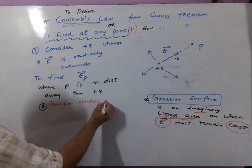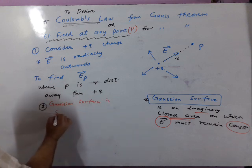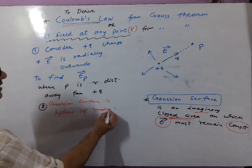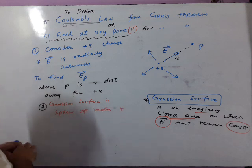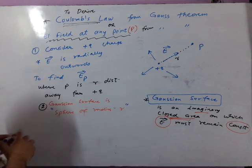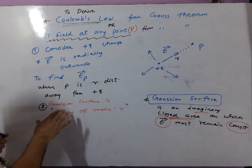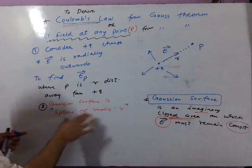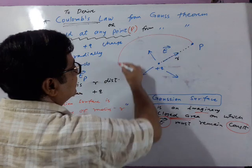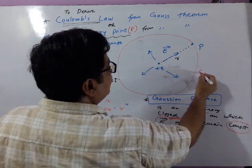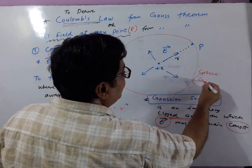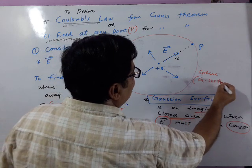As per Gauss, the Gaussian surface is a sphere of radius R. We consider this sphere of radius R — draw a sphere of radius R. This sphere is the Gaussian surface. From our knowledge of electric field, we already know the formula for electric field at any point P due to a charge: it is KQ/R². The charge Q is fixed and constant, and for the sphere R is constant, so the electric field is constant on the surface of the sphere.